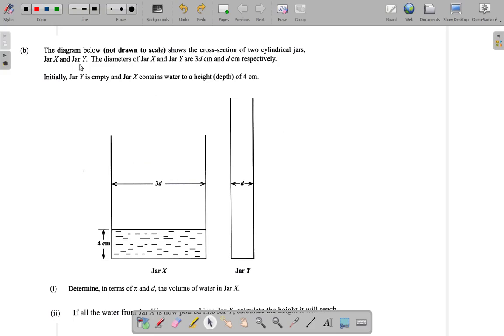Question 6B now. The diagram below, not drawn to scale, shows the cross-section of two cylindrical jars, Jar X and Jar Y. The diameters of Jar X and Jar Y are 3D and D respectively. Initially, Jar Y is empty and Jar X contains water to a height of 4 cm.